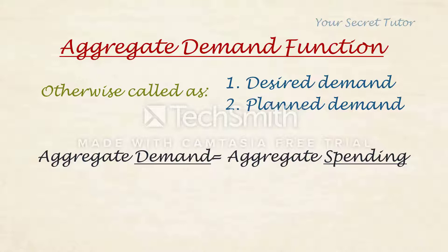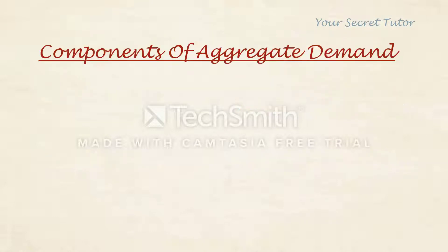Demand is spending, so you can say Aggregate Spending. You can also say Desired Spending or Planned Spending. These are all alternative words for Aggregate Demand.